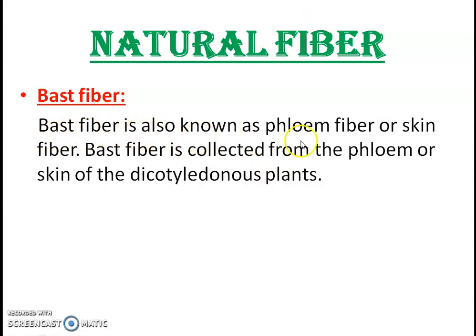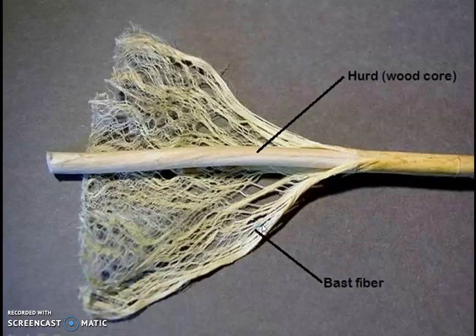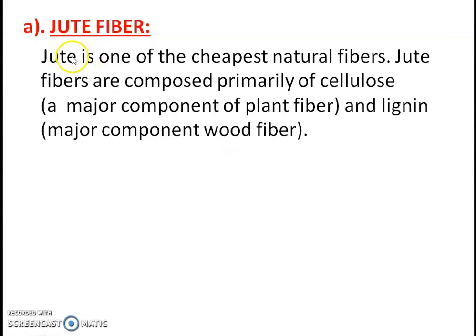Bast fiber is also known as phloem fiber or skin fiber. Bast fiber is collected from the phloem or skin of dicotyledon plants. Bast fibers are found in the stem of the plant, providing the plant its strength. They are collected from the phloem tissues of the plant. Here you can clearly see the bast fiber, which looks like the skin of a plant.